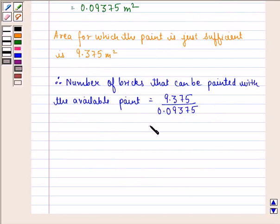That is equal to 100, because if we remove the decimals the numerator gets multiplied by 10,000 and the denominator gets multiplied by 100,000. So we see that 9375 gets cancelled with 9375 and 1000 into 100 gives us 100,000. So this will give us 100.